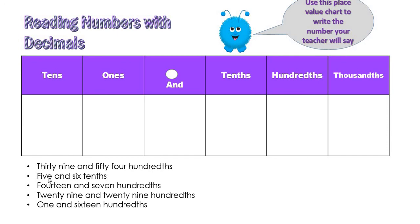Five and six tenths — five and this is the decimal point — six tenths. Five and six tenths. Next: fourteen and seven hundredths. Seven hundredths.